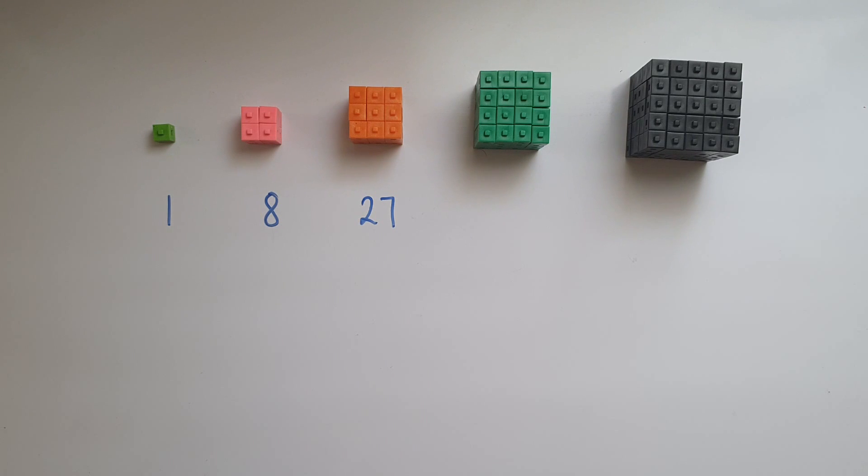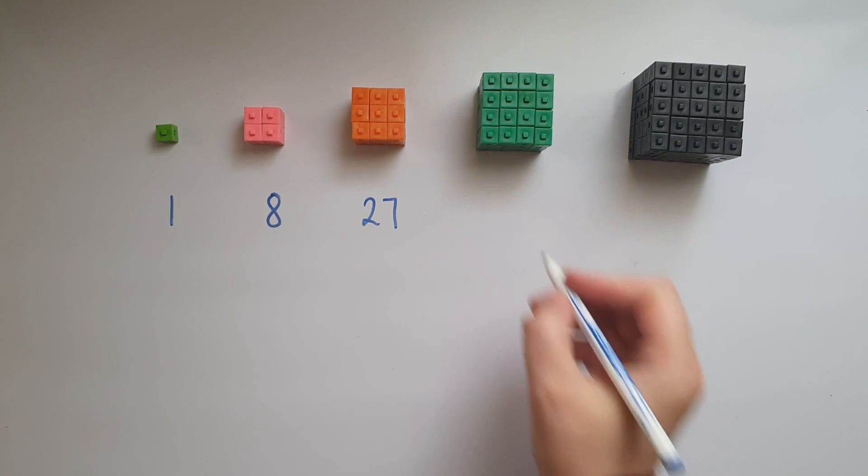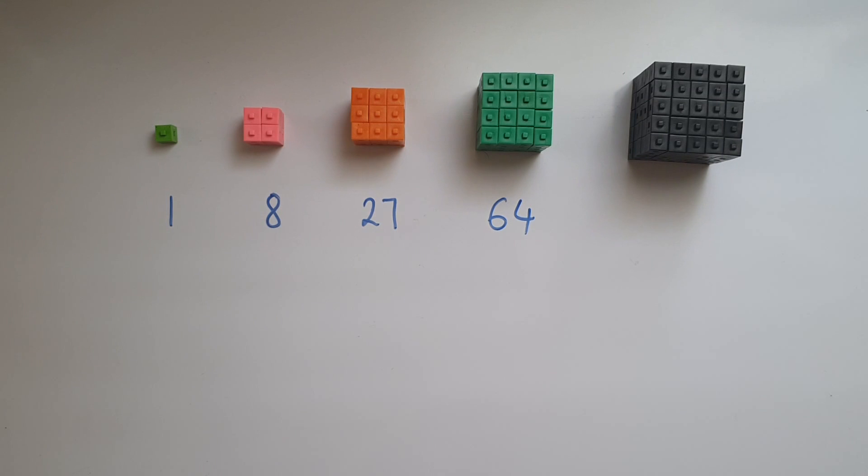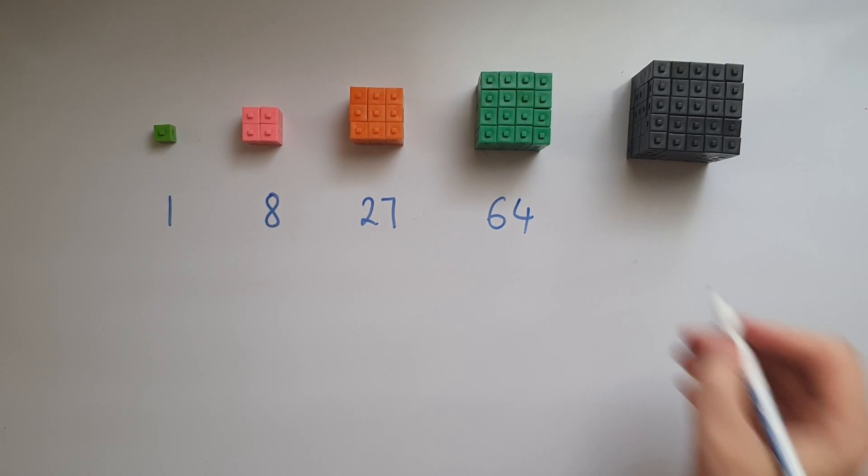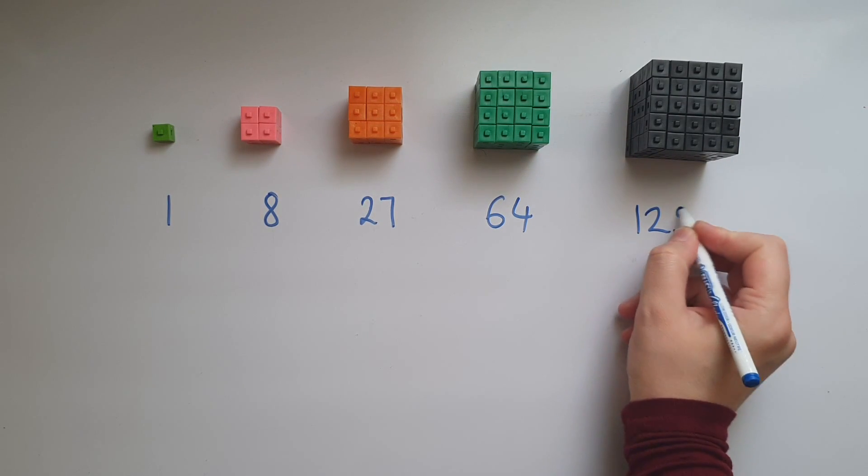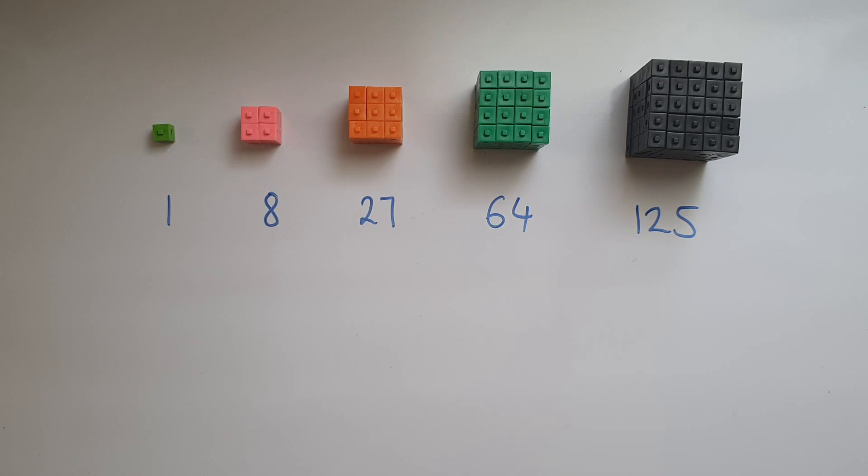Then 4 times 4 times 4, which is 64. And 5 times 5 times 5, which is 125. These are the main ones that you need to remember by heart.